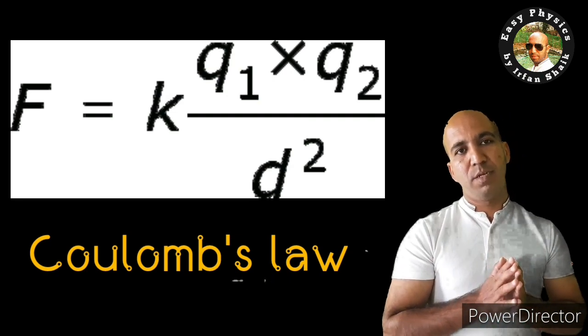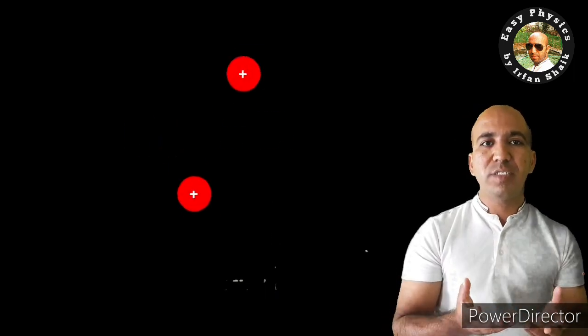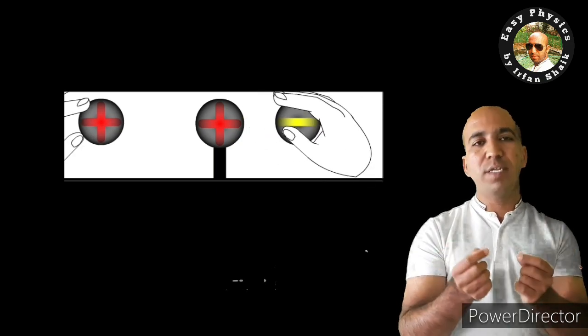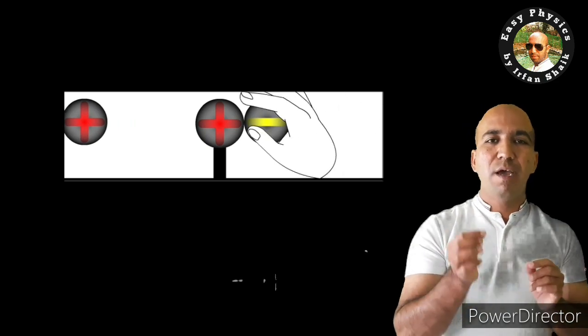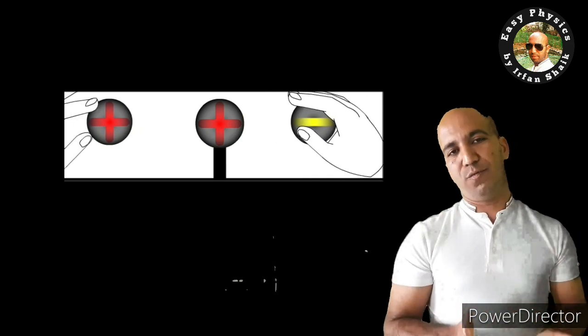This formula is called Coulomb's law. Coulomb's law gives us the force between two charges, whether attraction or repulsion. Like charges have a repulsion force, and unlike charges have an attraction force. That means if we place a proton and a proton together there will be repulsion force between them, and if we place a positive and a negative charge close to one another there will be attraction force.